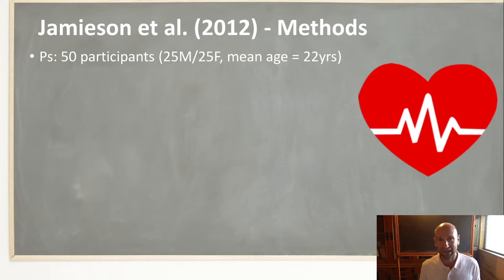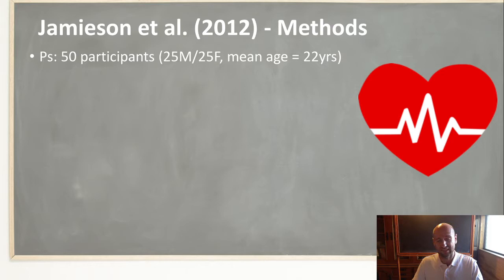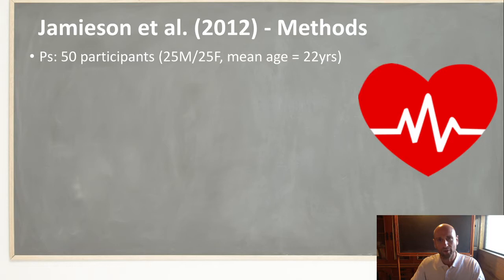They have five minutes to prepare, then they speak for five minutes in front of two or three evaluators who sit there with really negative body language or stone faces. They don't give any positive encouragement. Then there's a math challenge — you're given a random number and told to count backwards in eights from 3,024, while still receiving negative feedback. Before and after the test, stress levels are measured via cortisol, blood pressure, and heart rate. The TSST is the most common way psychologists create stress in a lab.